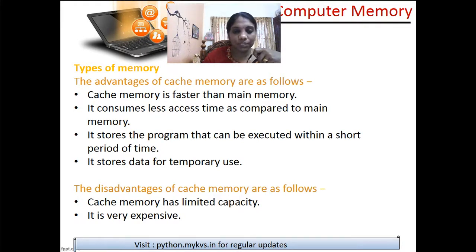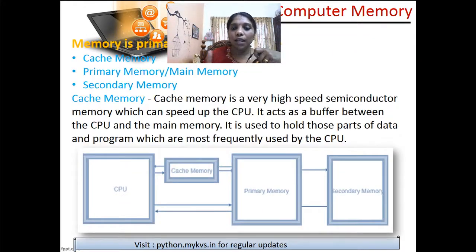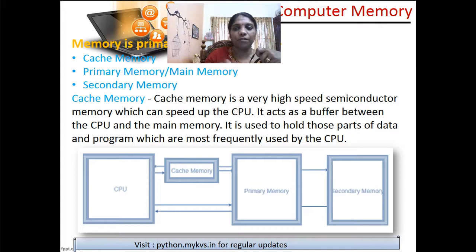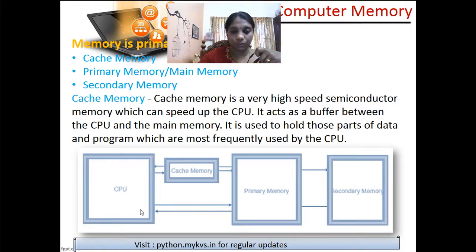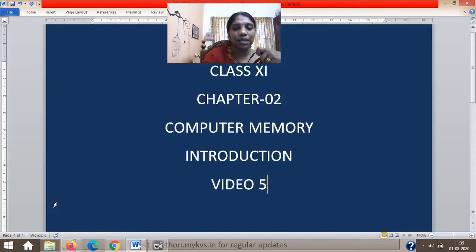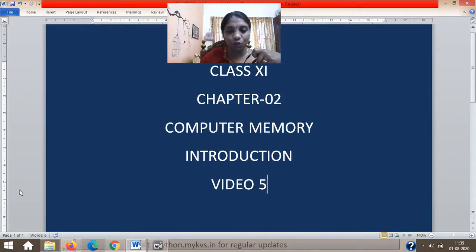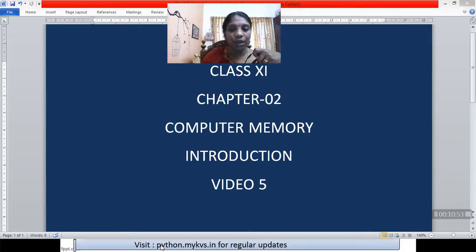To summarize: cache memory is a very high-speed memory that speeds up the CPU. It acts as a buffer — a mediator — between the CPU and the main memory. Its main use is to reduce the average time to access data from the main memory. We will continue from this point in the next class, moving on to the remaining types of memory in a better manner.